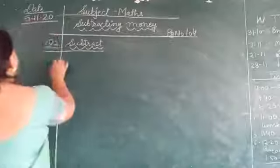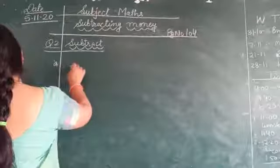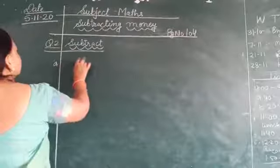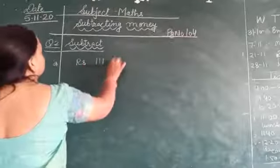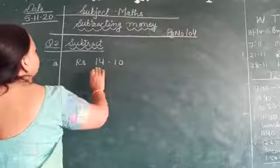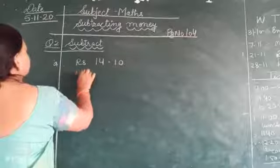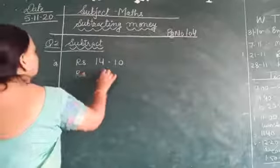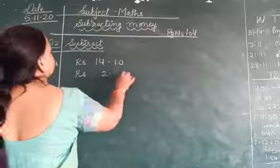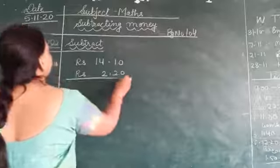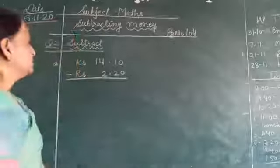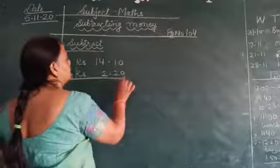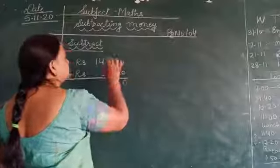So here decimal we have. Yesterday we solved without decimal. Rupees 14.10, 14 rupees and 10 paise, minus rupees 2.20. Here we have minus sign because we have subtracted here. So 0 from 0 minus, then answer is 0.